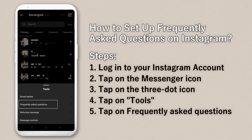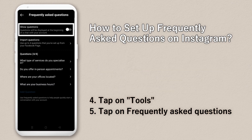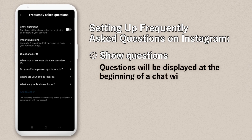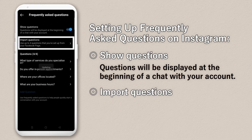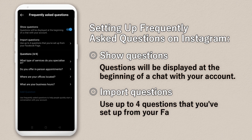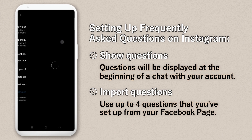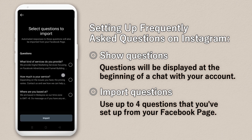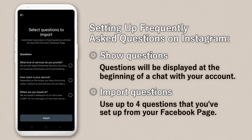Click on it. You can click 'Show Questions' — questions will be displayed at the beginning of a chat if your account has show questions enabled. You can also import questions, which are the questions linked to your Facebook page. Click on it.